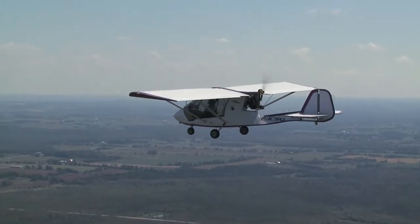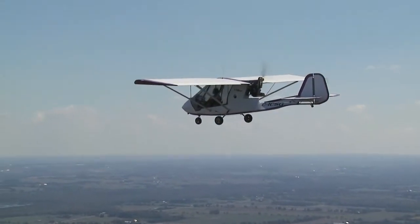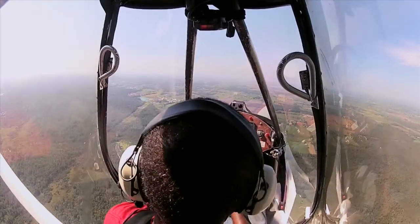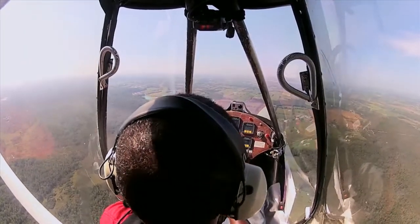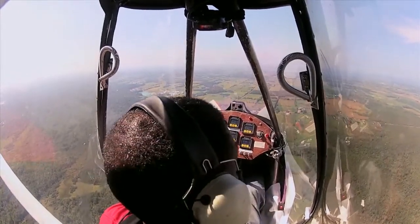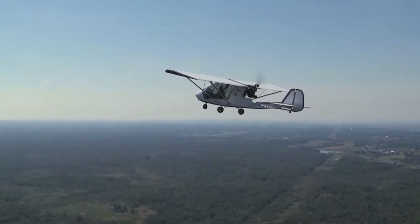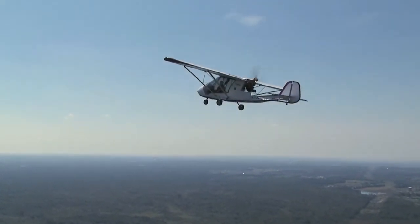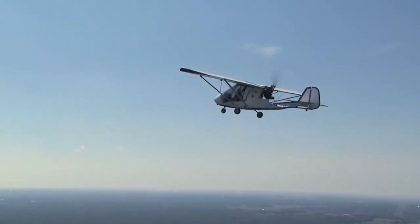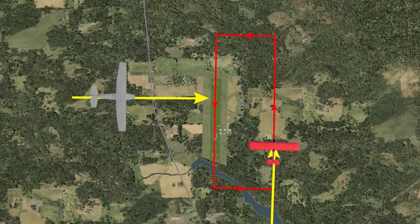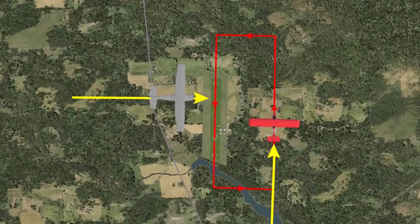As you enter the ATF area, continue listening in on the unicom frequency. Then as you join the airdrome circuit, report in giving your position: Baldwin Unicom, Charlie Sierra Golf, joining straight in left-hand downwind 19, Baldwin. As you enter the circuit, be even more vigilant about possible conflicting traffic than at a mandatory frequency airdrome, especially at mid-downwind — the only other position in the circuit where inbound aircraft should be joining.